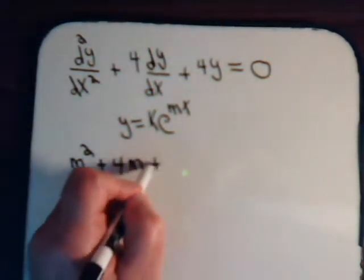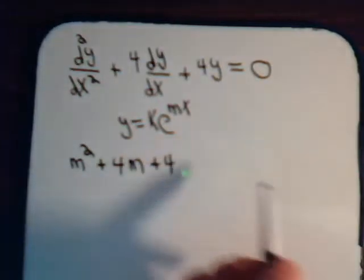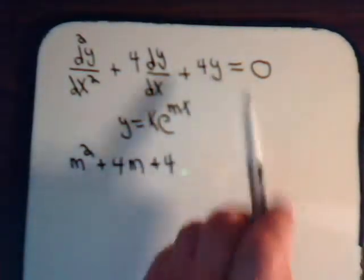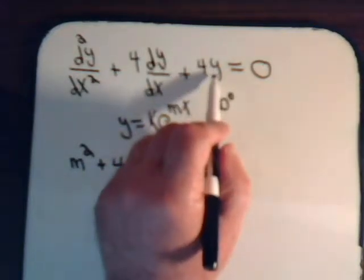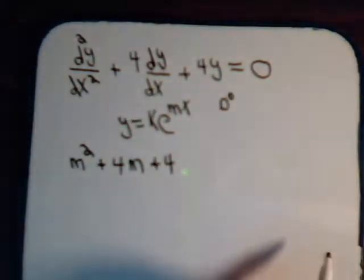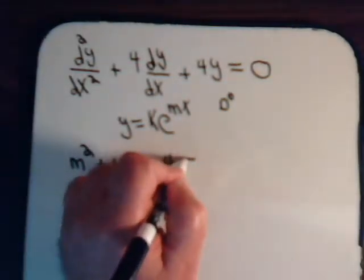Then we have plus 4. And here there's no derivative, so we can think of it as a differential to the 0 power. So the y gets replaced by m to the 0 power, but that's just 1. So this is the auxiliary equation.